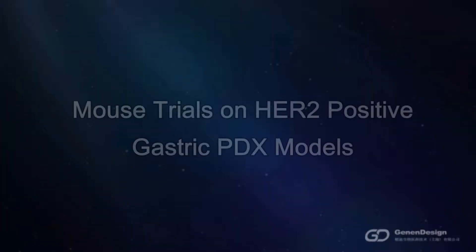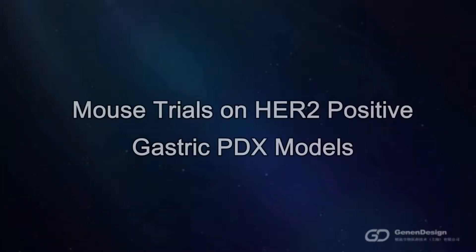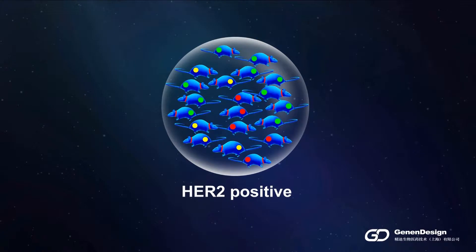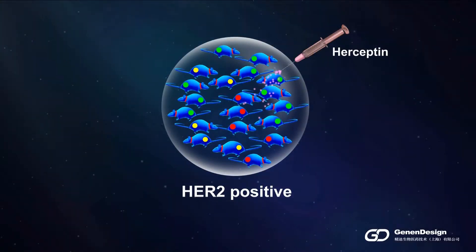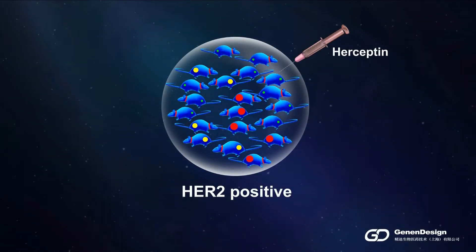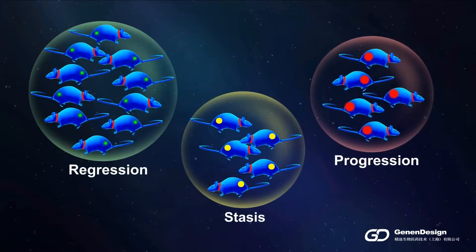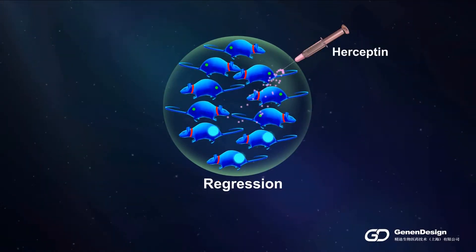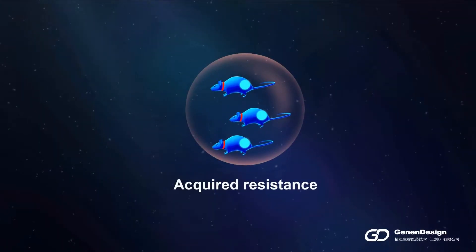In the following video, we will use HER2 positive panel as an example to demonstrate the value of PDX models in understanding cancer signaling pathway and in helping targeted drug discovery. When HER2 positive gastric PDX models are treated with anti-HER2 antibody Herceptin, about half of the models showed tumor regression or stasis, while another half kept progressing. And consistent with clinical results, some of the PDX models in the regression group will eventually develop resistance under continuous treatment of Herceptin.